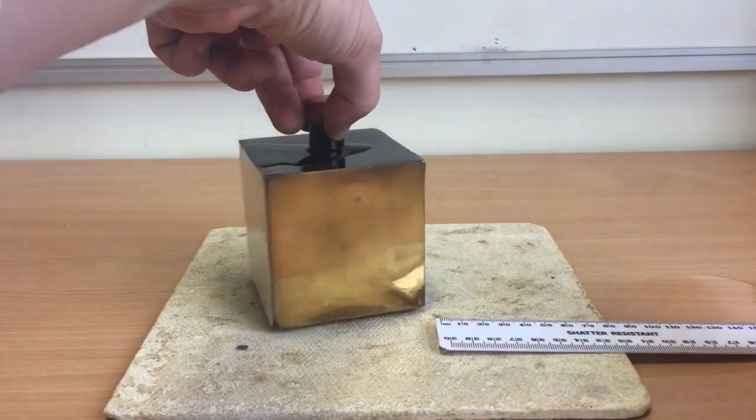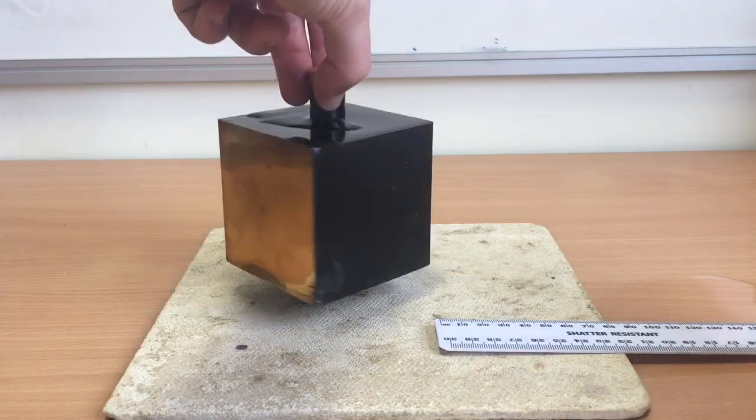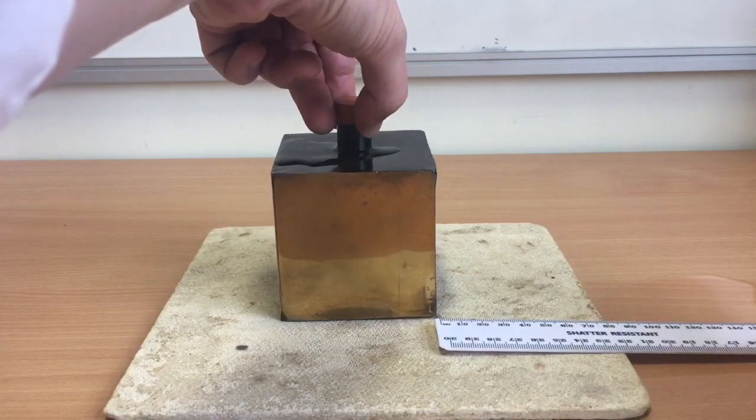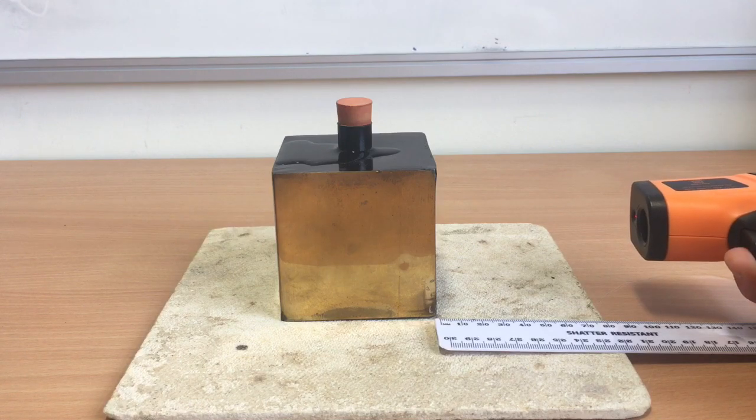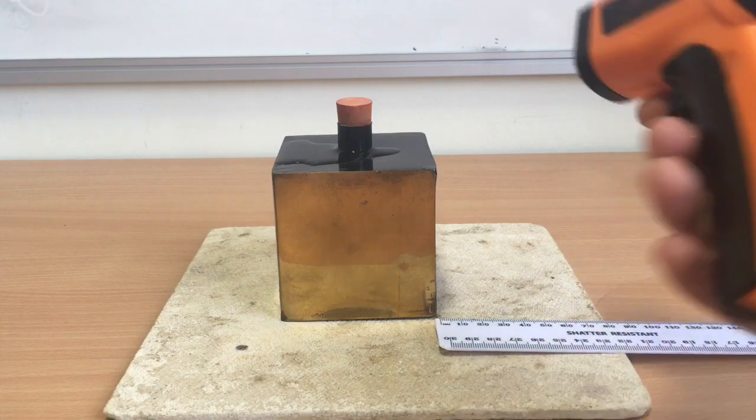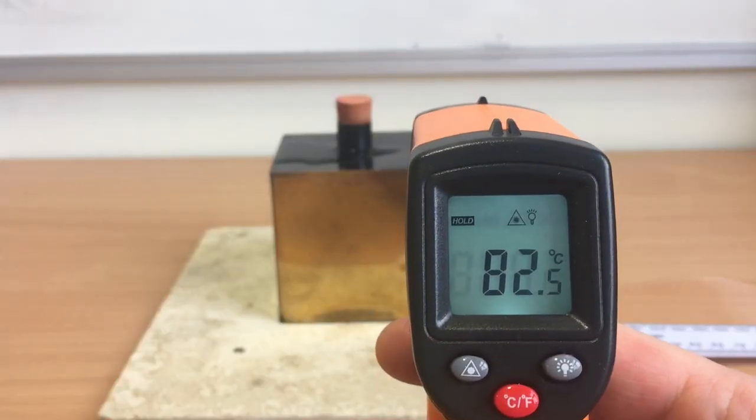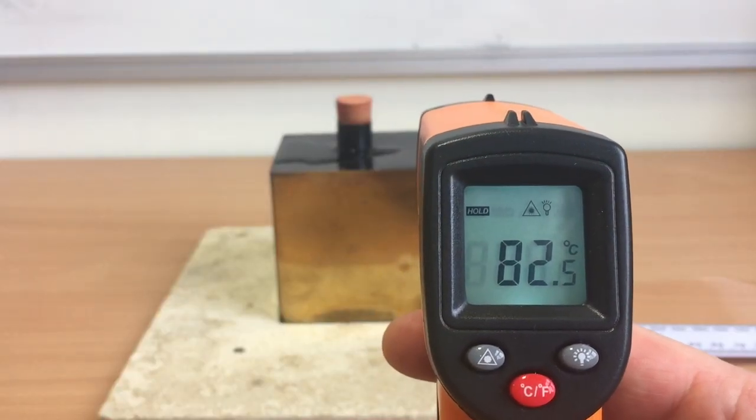I'm going to turn the Leslie Cube around. This time we'll be measuring, you can see the matte black side. I'll get the infrared detector to 10 centimetres. I take my reading. You can see this time it's quite different, much higher, 82.5 degrees Celsius.